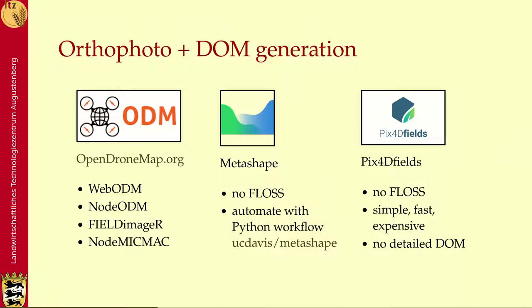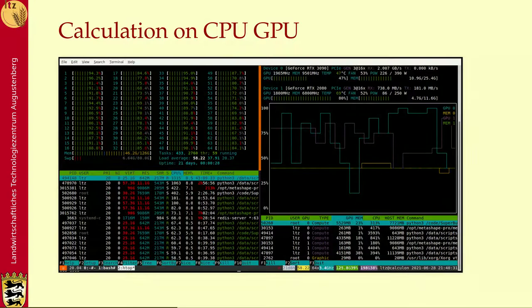We do that with OpenDroneMap, which is free software, and it has WebODM and NodeODM additionally as supplements for a GUI and API. Very interesting is FieldImager, which is our software for field trial analysis, and they have included the MicMac algorithm nowadays. Alternatively, we use Metashape, which is not free software but can be automated with a free Python workflow — UC Davis provides some source code on GitHub. Pix4D Fields is also not free software; it's simple and fast but expensive and provides no detailed digital object model or height model.